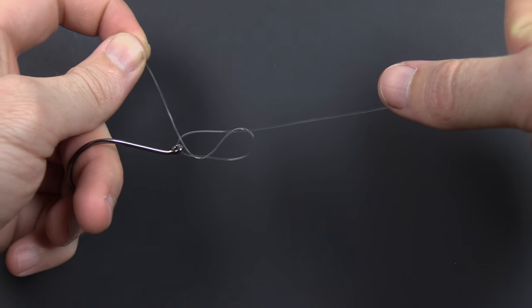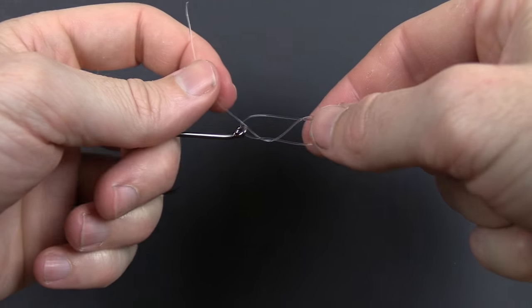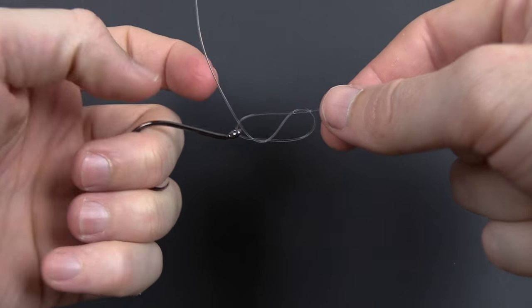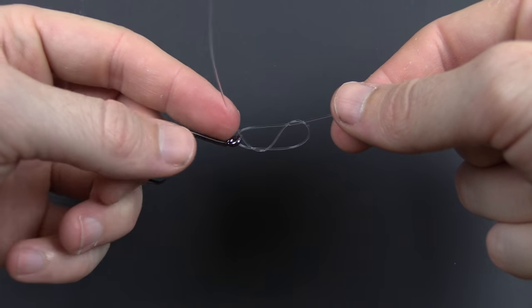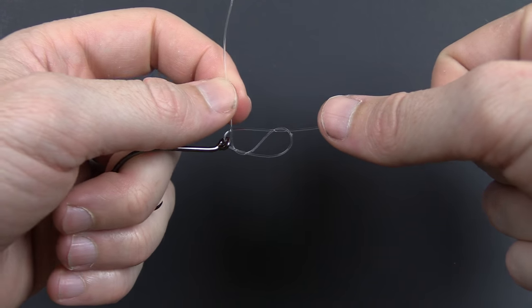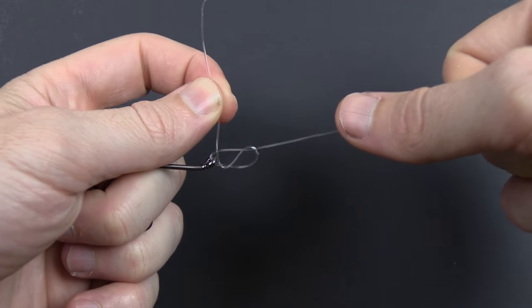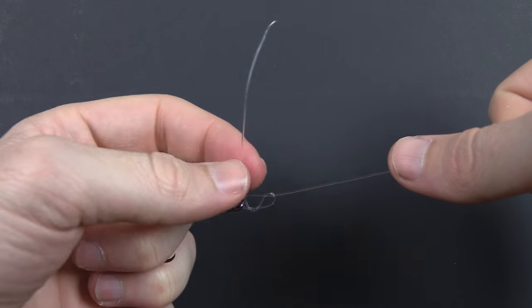Now you just pull it tight. One thing to remember, at least to be aware of, is that you want this tag end to be at a 90-degree angle to the hook when it actually sets. So I find it best just to help it—just keep the tag end going straight up and pull it all together.